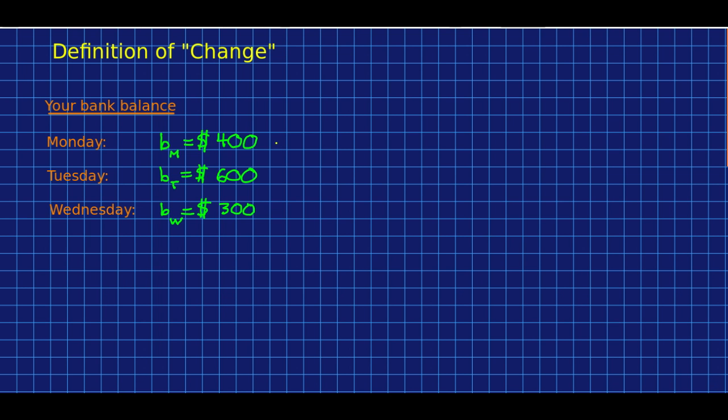Having talked about conservation laws and symmetry and things not changing, now we need to talk about when things do change and how we define a change in a quantity. So as an example, let's take a bank balance. And suppose on Monday your bank balance is $400 and on Tuesday your bank balance is $600. You would write that your change in your bank balance, since I'm using B for bank balance, I'll call this delta B. Delta means change in. I think we all agree the change in your bank balance was $200.